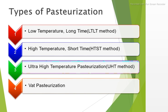The types of pasteurization: The first method is Low Temperature, Long Time — LTLT — at 63 degrees Celsius, which is 145 degrees Fahrenheit, for 30 minutes. The second method is High Temperature, Short Time — HTST — at 72 degrees Celsius, 161 degrees Fahrenheit, for 15 seconds.